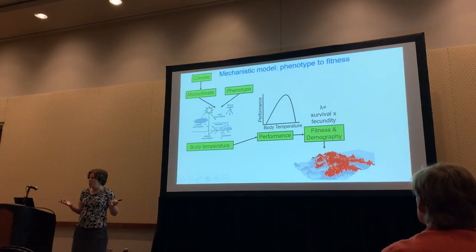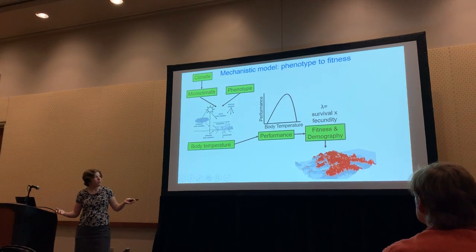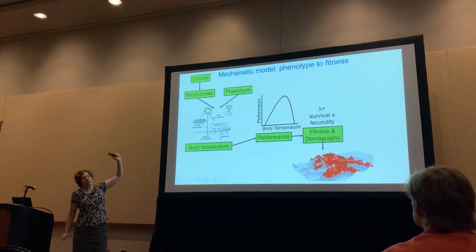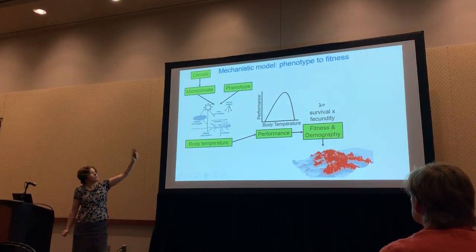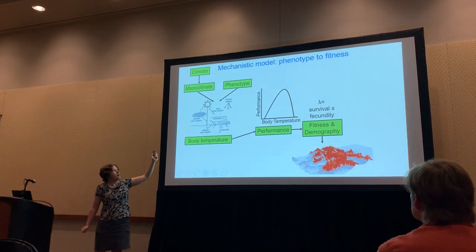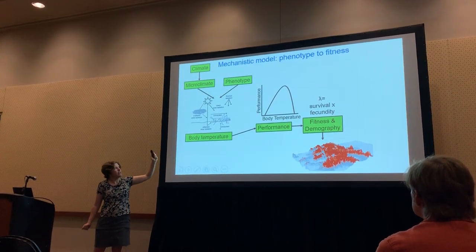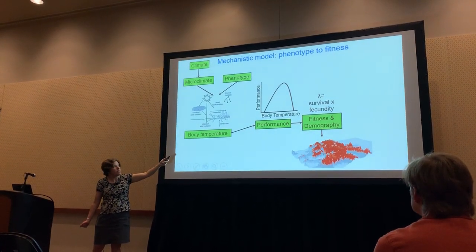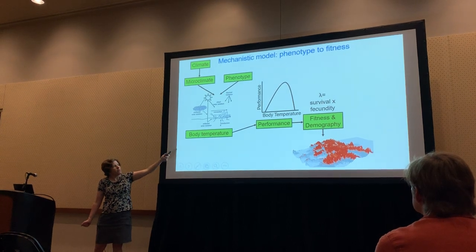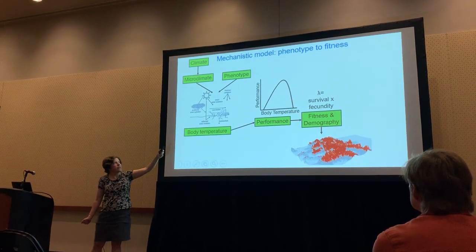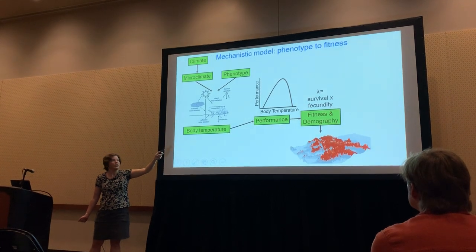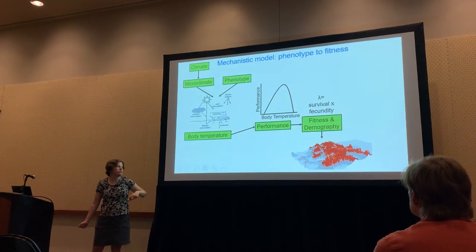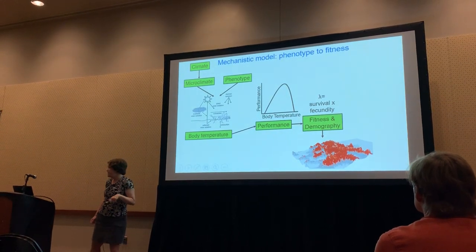The main approach we've been using is to take a lot of different empirical data to parameterize a mechanistic model. We take climate data, translate that into microclimate, couple that with phenotypic data, and run it through a biophysical model to estimate body temperature in a given environment. We then use lab estimates of the temperature dependence of performance to predict performance, and use key elements of performance influencing survival and fecundity to predict fitness and demography.